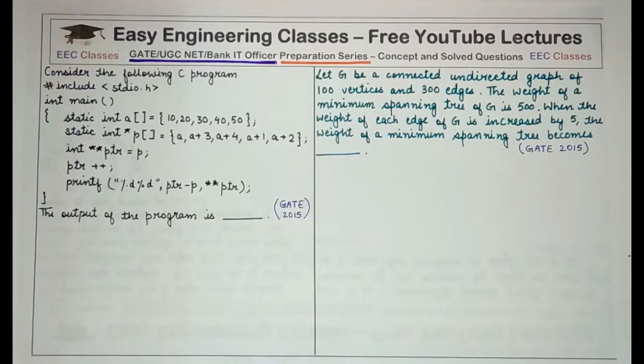The first question says, consider the following C program. The program is hash include stdio.h int main and inside main you have a static int array which has the values of 10, 20, 30, 40, 50, then a static int star p array. That means a pointer array which is pointing to various locations of the previous a array. So let's first construct the arrays that are given to you.